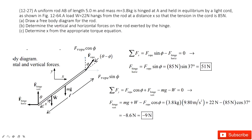We project F_hinge into two components: the horizontal component and the vertical component. For static balance, the net force is zero. Looking at the X component, we can project the rope tension into X and Y components. The X component is F_rope·sin(φ), and the Y component is F_rope·cos(φ). So for the X direction: F_rope·sin(φ) minus F_hinge_horizontal equals zero. Solving this gives us F_hinge_horizontal.